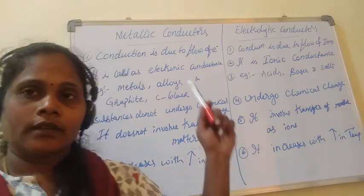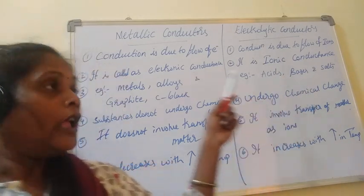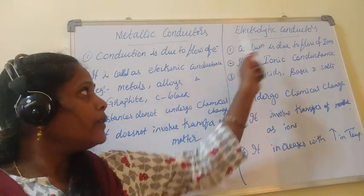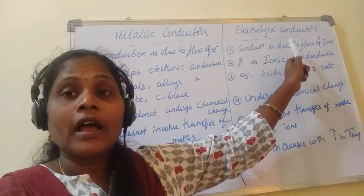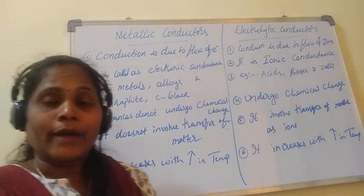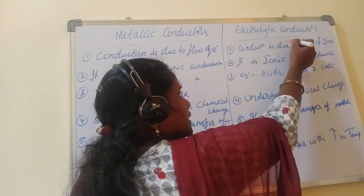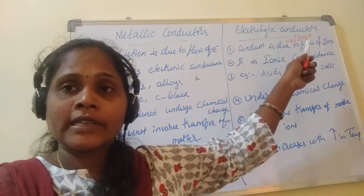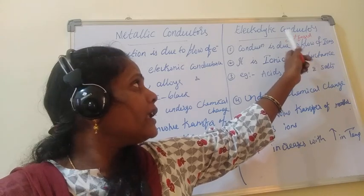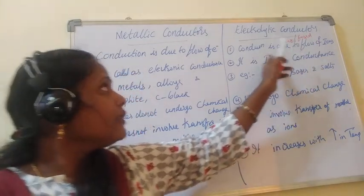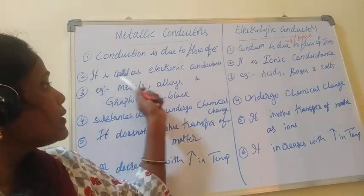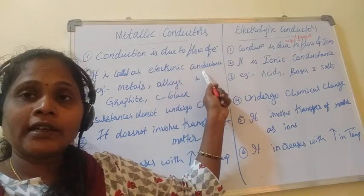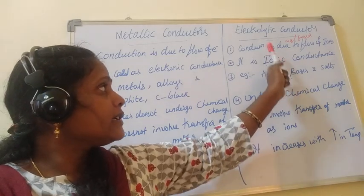Metallic conductors show conduction due to the flow of electrons, whereas electrolytic conductors conduct due to the flow of ions. Electrolytic conductors can show passage of electricity in aqueous as well as fused state — aqueous means dissolved in water, fused state means without water. The conductance due to the flow of electrons is called electronic conductance, and the conductance due to the flow of ions is called ionic conductance.